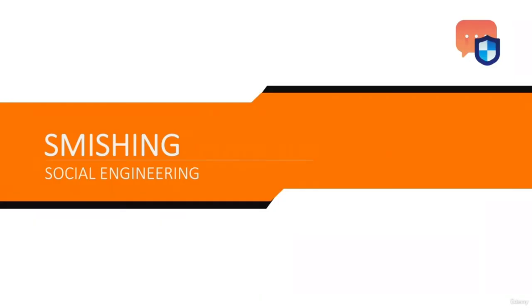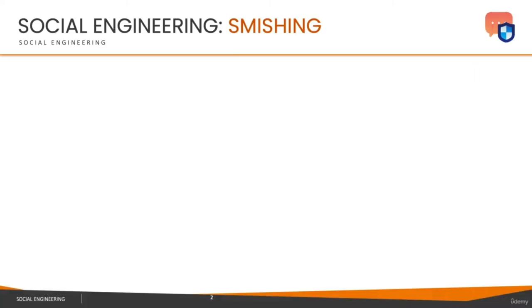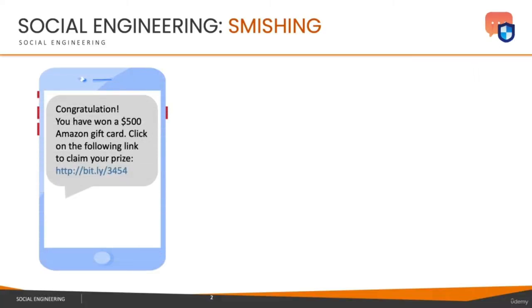Welcome to smishing — a new type of social engineering attack that has been widely used by attackers around the world to get people to reveal their confidential and sensitive information. The basic idea of smishing is that it's social engineering via text messages. For example, you could receive a message like 'Congratulations, you have won an Amazon gift card.'